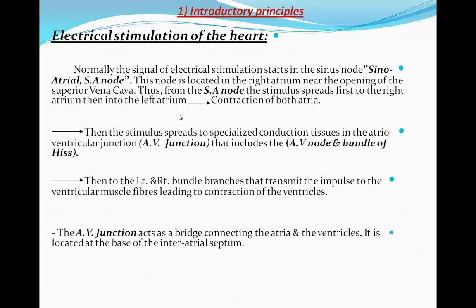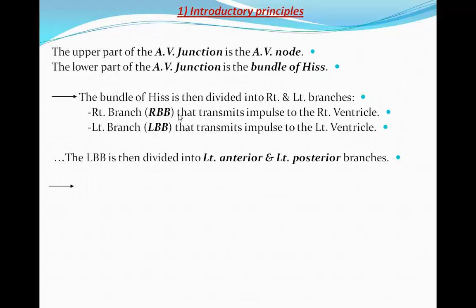The AV junction acts as a bridge connecting the atria and the ventricles. It is located at the base of the inter-atrial septum. The upper part of the AV junction is the AV node, and the lower part is called the bundle of His. The bundle of His is then divided into right and left branches.